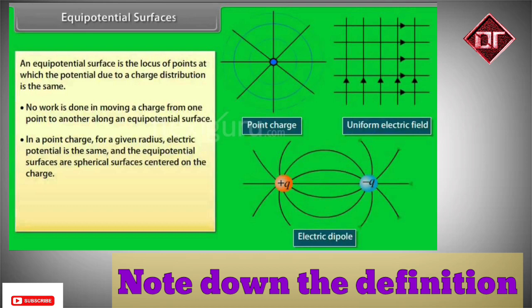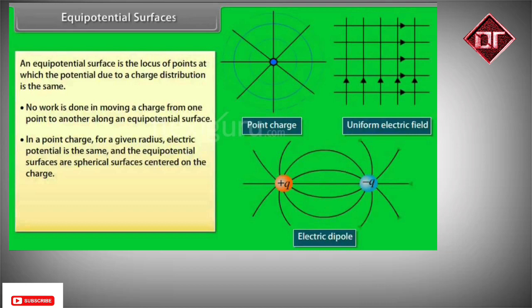Now let's understand what an equipotential surface is. An equipotential surface is a surface in which every point has the same electric potential. In other words, the work done in moving a charge over an equipotential surface is zero — meaning if a charge moves from one point to another on an equipotential surface, the work done is zero.